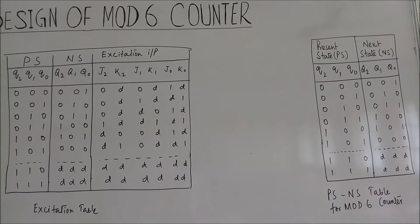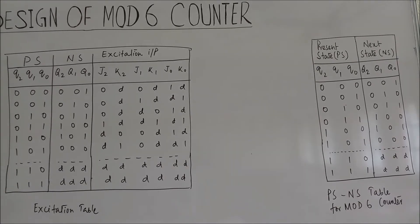Similarly, we draw the table for the remaining cases. Then we draw the K-map to find the expressions of J2, K2, J1, K1, J0, and K0.